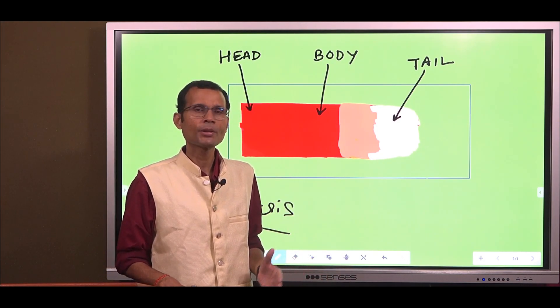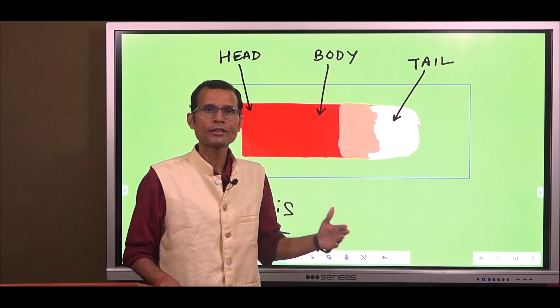So that's it. That was about the peripheral blood smear and how it's made and where do you find different cells.